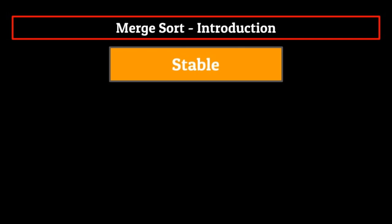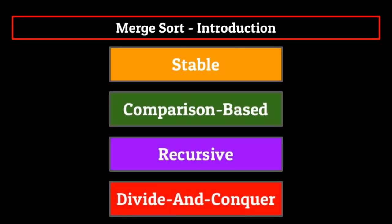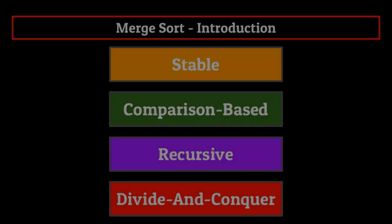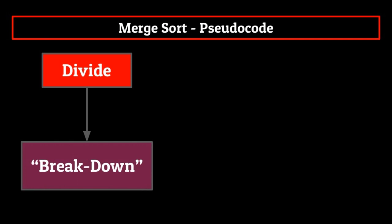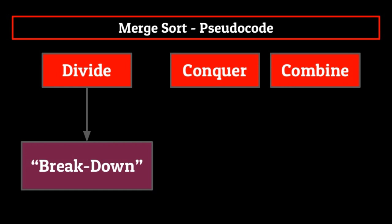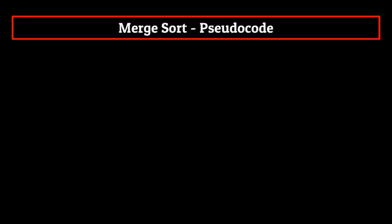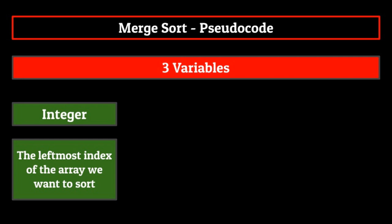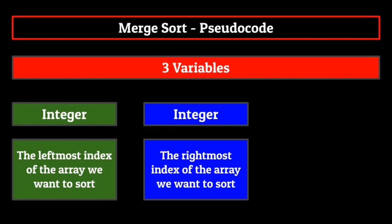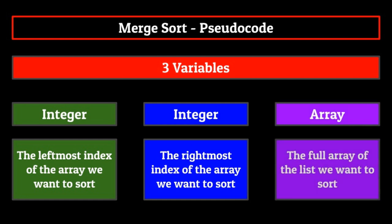So there it is: stable, comparison-based, recursive, divide and conquer — four adjectives that hopefully help you understand the gist of merge sort. Now that we have the basics down, let's jump straight into it and talk about what the pseudocode for merge sort looks like. For this portion of the video, I'm going to refer to the division of the list as the breakdown phase, and the recombining of our list as the build-up phase. The first thing to point out is that when using this algorithm, we will actually have three arguments passed into the function: an integer representing the leftmost index, an integer representing the rightmost index, and the array itself.